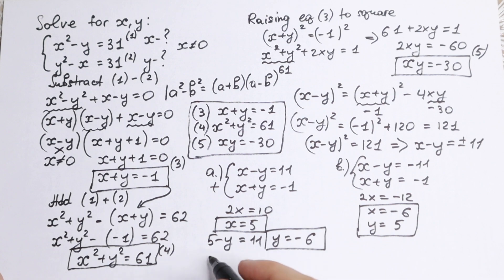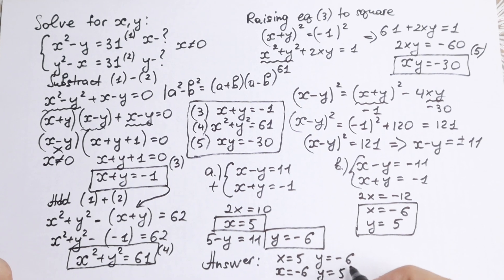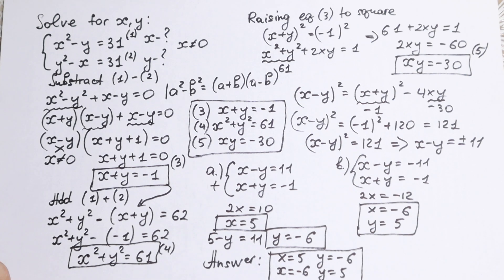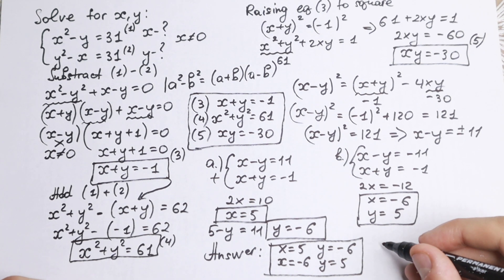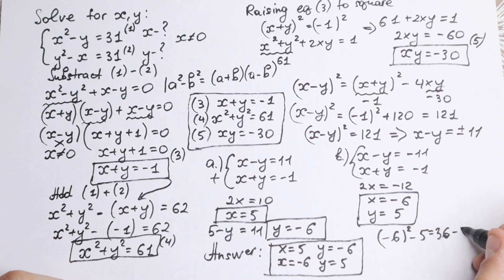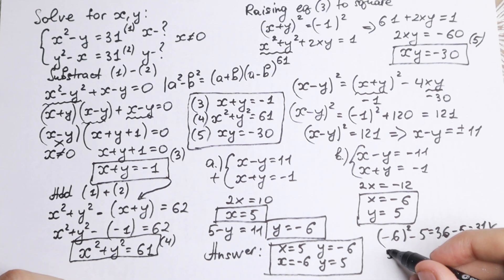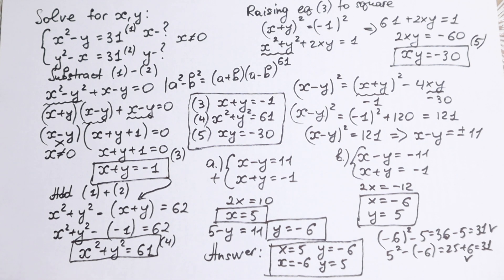So our answers are: x = 5, y = −6 and x = −6, y = 5. We can verify quickly: (−6)² − 5 = 36 − 5 = 31 ✓, and 5² − (−6) = 25 + 6 = 31 ✓. Both equations check out. Really interesting system of equations!